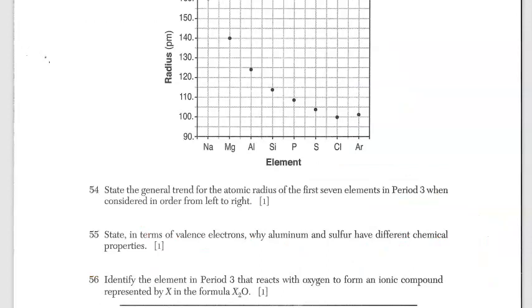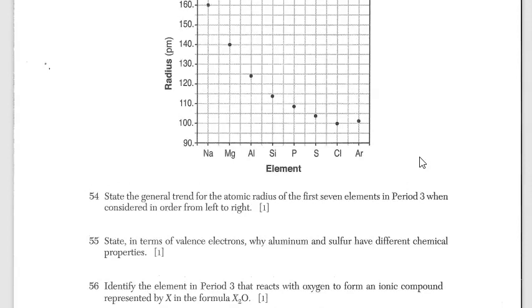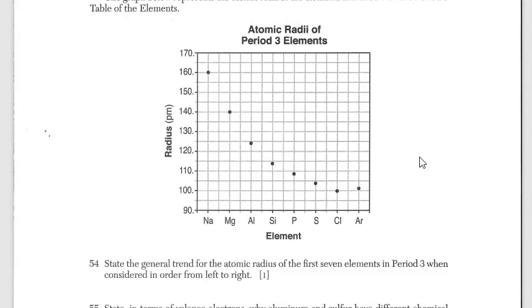Moving on to question 54. Questions 54, 55, and 56 are associated with the graph. We're dealing with the atomic radius here on the y-axis and the elements in period three going across on the x-axis. In question 54, state the general trend for the atomic radius of the first seven elements of period three when considered in order from left to right. We're going from left to right, and we can see that the atomic radius decreases. Fairly easy, straightforward.